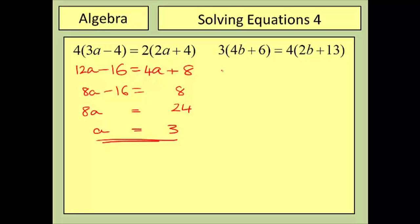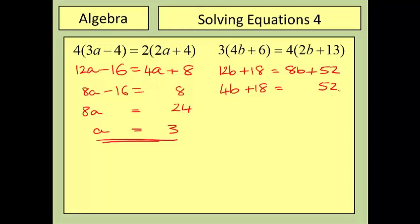For the second bracket question: expand to get 12b plus 18 equals 8b plus 52. Subtract 8b from both sides giving 4b plus 18 equals 52, then subtract 18 from both sides giving 4b equals 34, then divide by 4 — b equals 8.5. Well done if you got those last questions correct.